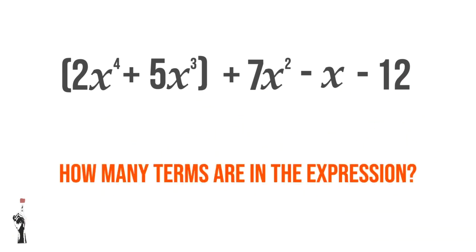Well, it looks like there are five, but we realize that there are brackets, and brackets group terms together. So we count 2X to the power of 4 and 5X to the power of 3 together — because they're in brackets, we count them as one term.